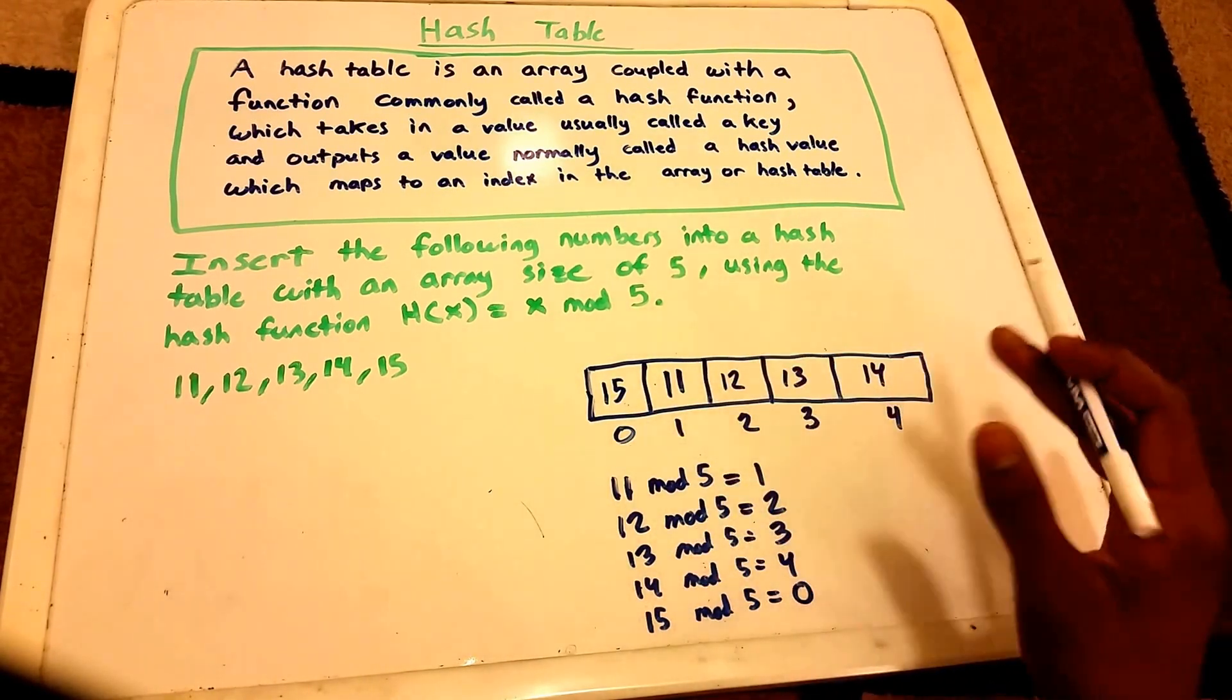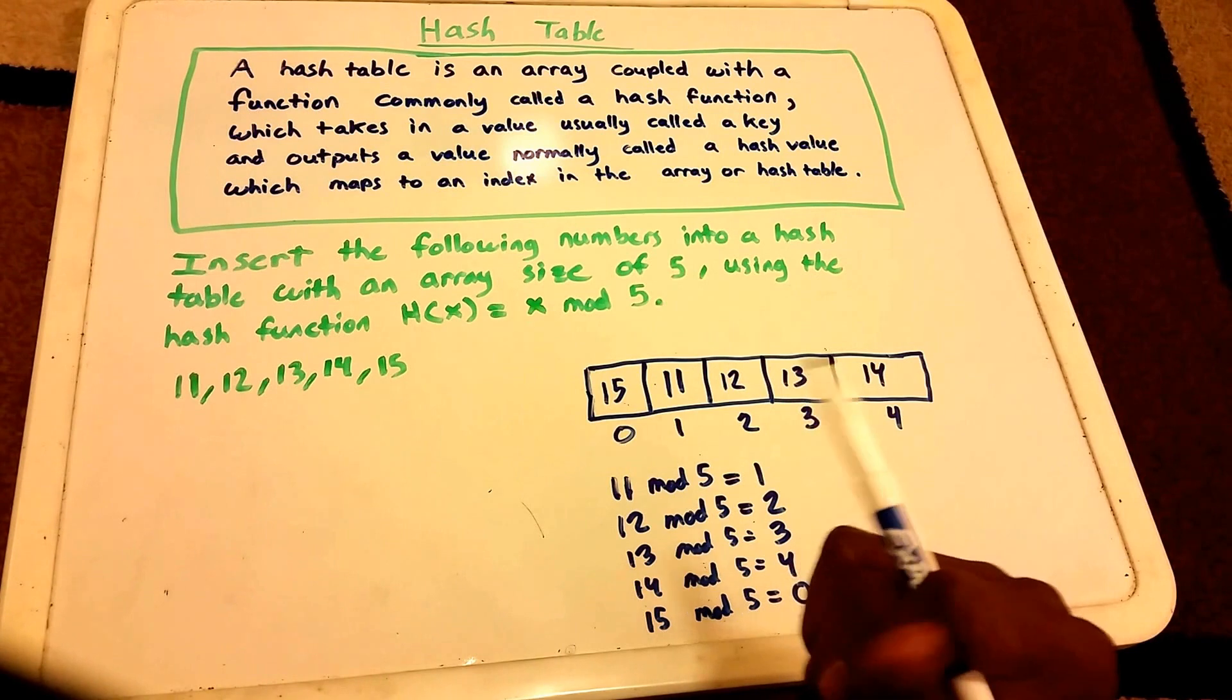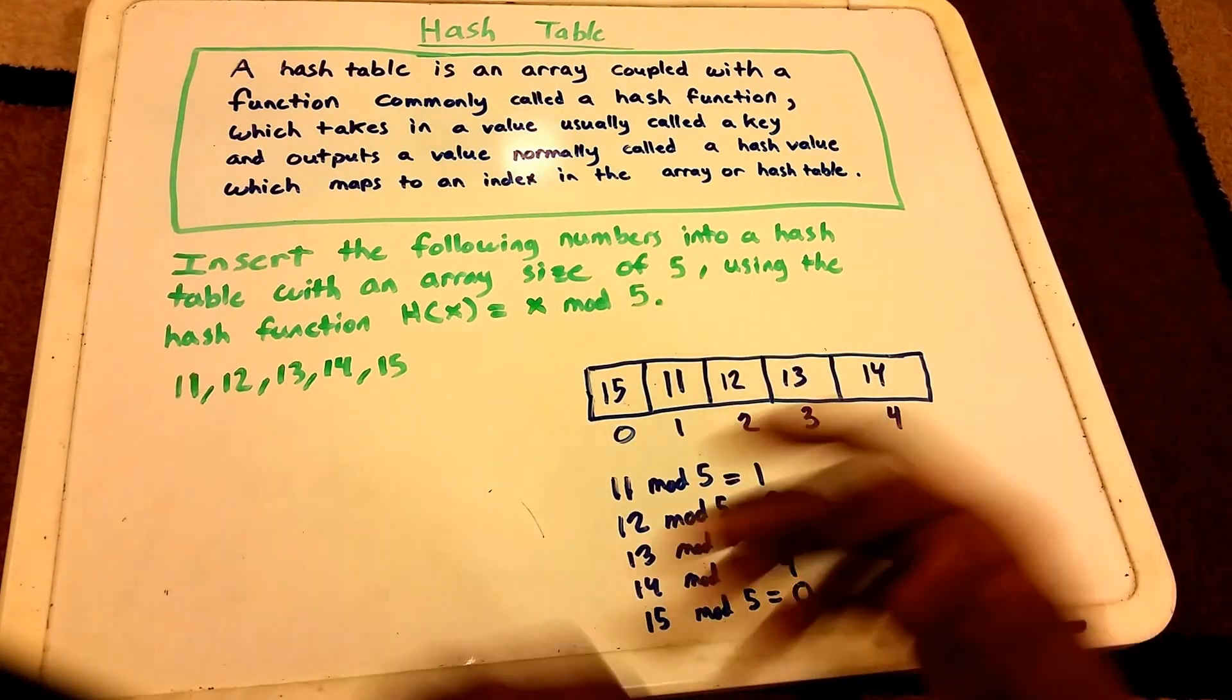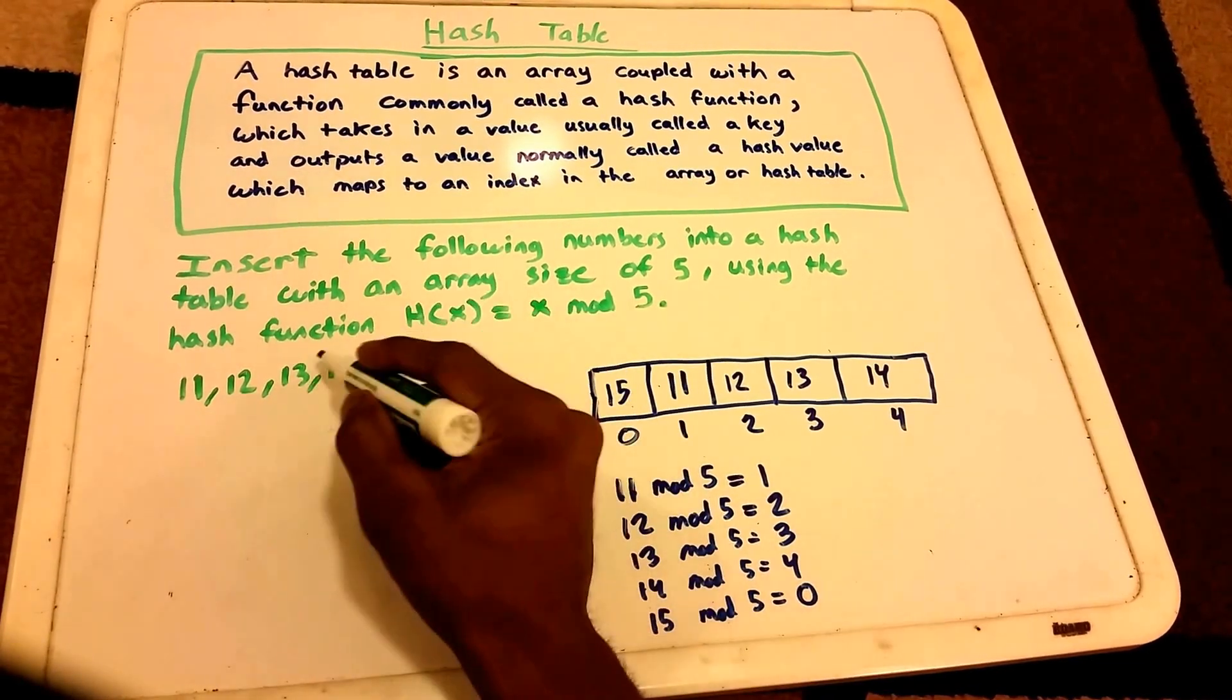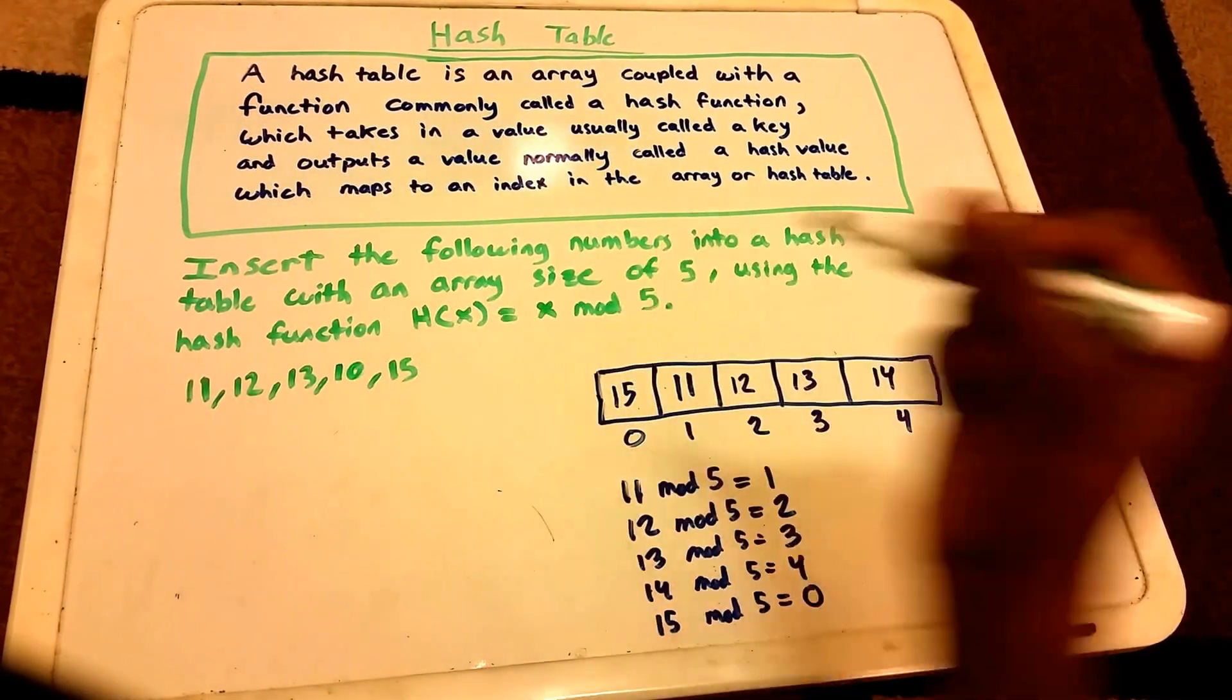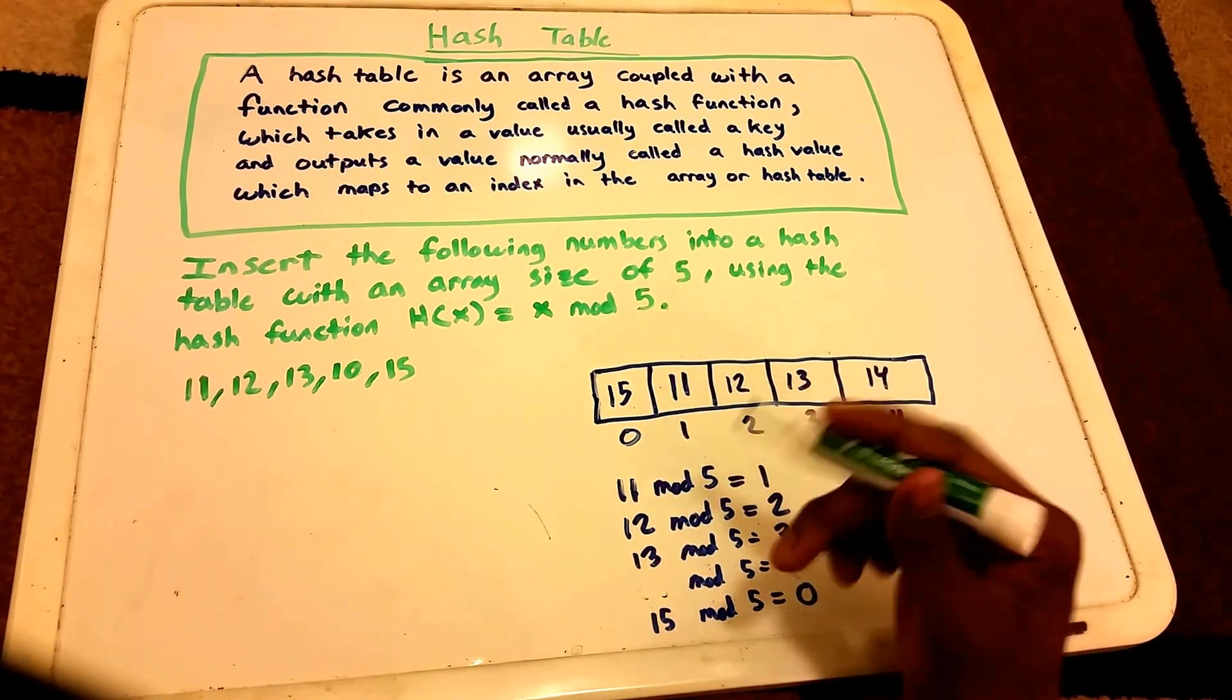That's basically how you use the hash table with the hash function. But what if we had different input? Suppose instead of this 14 here, we had 10. Now where we have 14, we have the value 10.